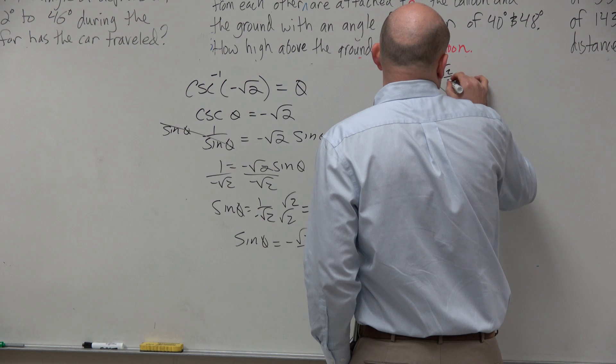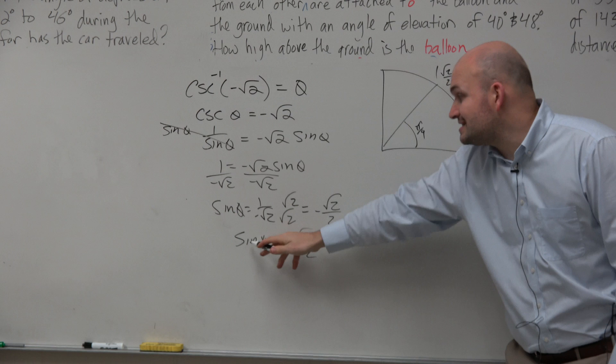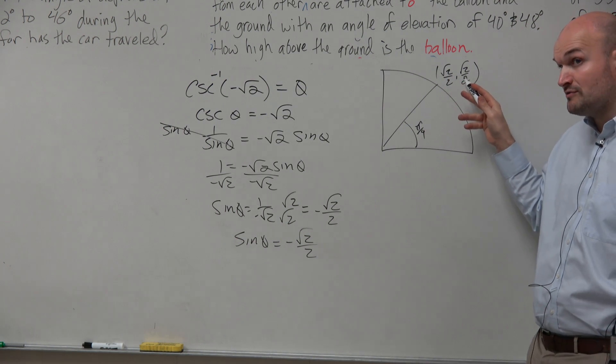That coordinate point is √2 over 2, comma √2 over 2. Sine represents the y-coordinate. So you can see that the sine of π over 4 would give you positive √2 over 2.